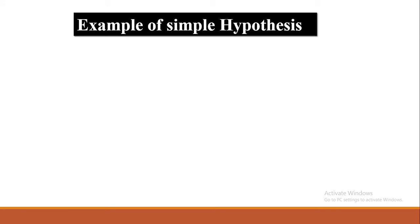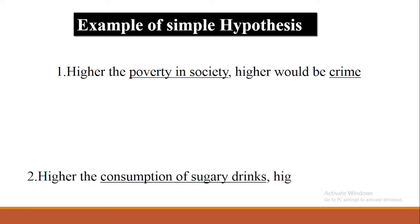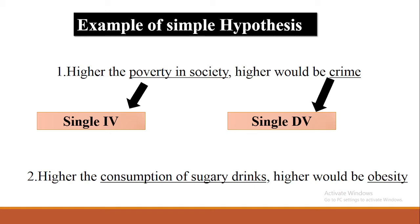Example of a simple hypothesis: higher the poverty in society, higher would be the crime rate in that society. Second example: higher the consumption of sugary drinks, higher would be the obesity levels. You can see there is a single independent variable and a single dependent variable. In the first example, poverty in society is the single independent variable while crime is the single dependent variable, because the crime level depends on the level of poverty. If there is more poverty there would be more crime rate; if there is less poverty there will be less crime rate.